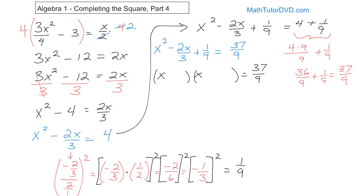We have to factor the left and should get a perfect square. We have x times x, and what times what gives 1 ninth? One third times 1 third gives 1 ninth. Because of the negative interior sign, we need two negatives. Double-check: negative 1 third times negative 1 third gives positive 1 ninth. The inside terms give negative 1 third and the outside terms give negative 1 third — add them, you get negative 2 thirds. So it is a perfect square.